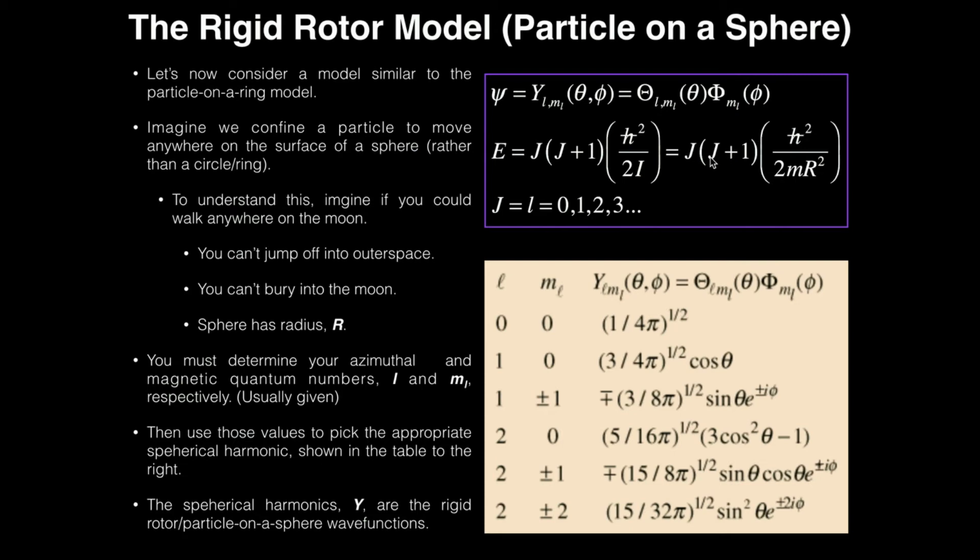And then multiply times the azimuthal quantum number plus 1, and then times the azimuthal quantum number. And whatever this turns out to be, that is the energy of the particle that is confined to the sphere.